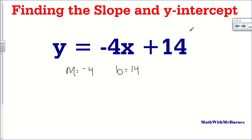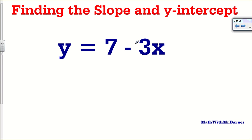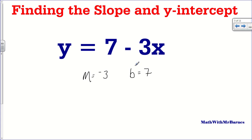Let's do another example of that. So if we have something like this where the form is flipped around a little bit — the slope is always in front of the variable, not just the first number; it's always next to the X. So the slope in this particular case is minus 3, and then the Y-intercept is 7. Don't be fooled if the terms are in a different order. Slope is always next to the X.